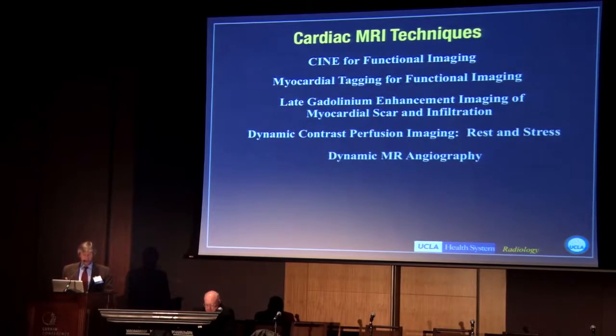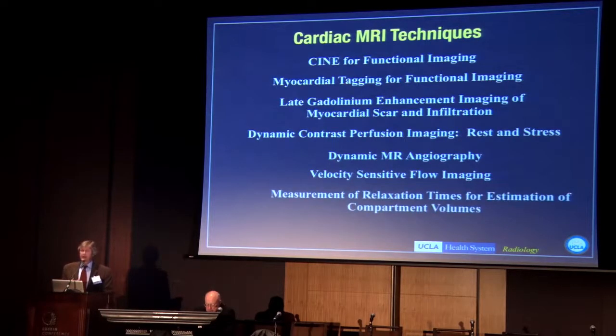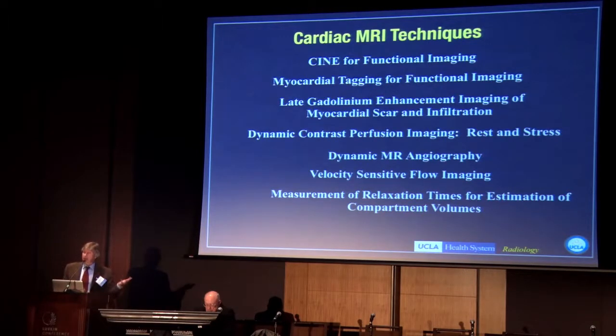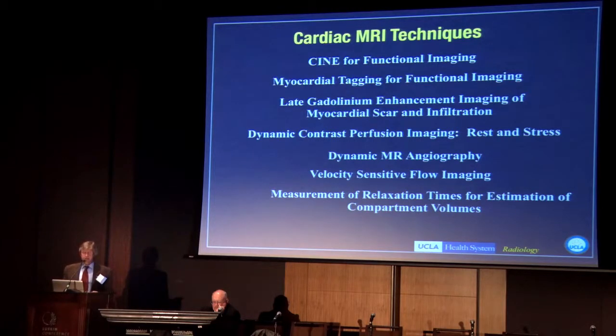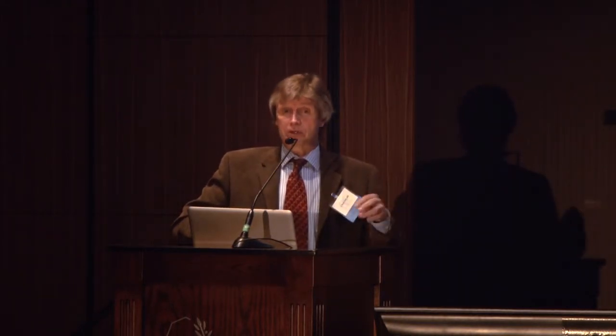Dynamic MRI angiography — you've seen some examples. Velocity-sensitive flow imaging, again Pierangelo has mentioned. With MRI, we can do this pretty much independently of the orientation or axis of the blood vessel — unlike duplex ultrasound, the orientation of the vessel isn't really a big deal; we can orientate the image slice in any plane. There's also increasing interest in the measurement of MRI relaxation times for the estimation of compartment volumes — a way to quantify regional extracellular volume fraction in the myocardium. And lots of others in progress and coming.